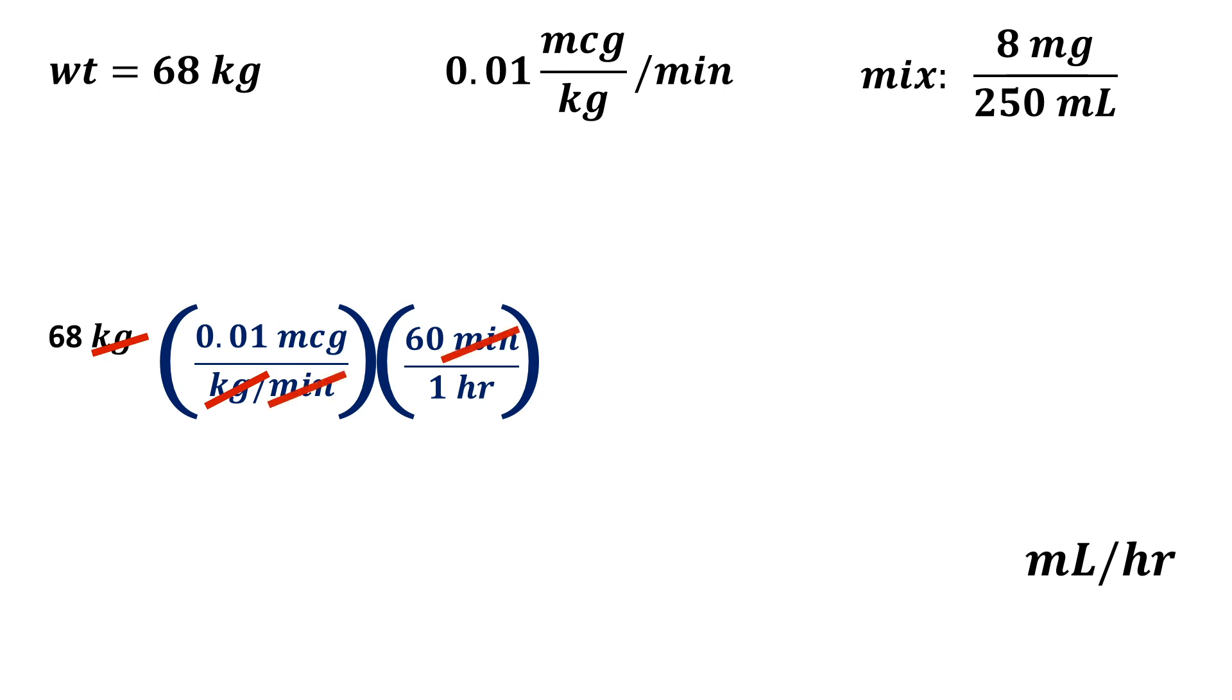We're also going to need to convert micrograms to milligrams because that's what our infusion is mixed in. We know that a thousand micrograms is equal to one milligram. We use this as our conversion factor placing micrograms in the denominator so we can cross cancel that.